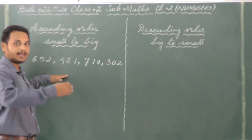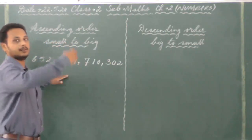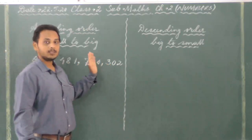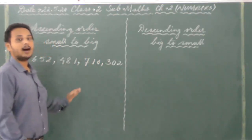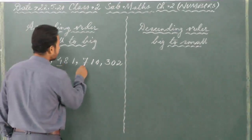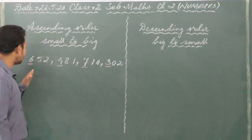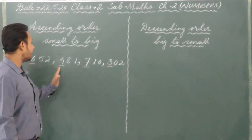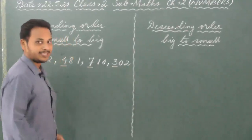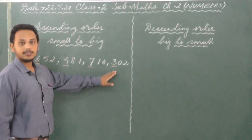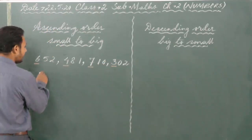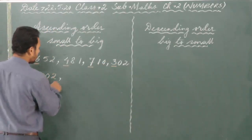Then the next number which is bigger than that will come next, then the other bigger than that. Now when we look at numbers, we always look at which place? The hundreds place. Now we have 6, 4, 7, 3 in the hundreds place. By looking at these numbers, you find out which is the smallest. The smallest here is 3, that means 302. So the first number will be 302.